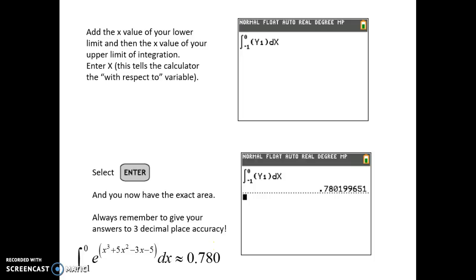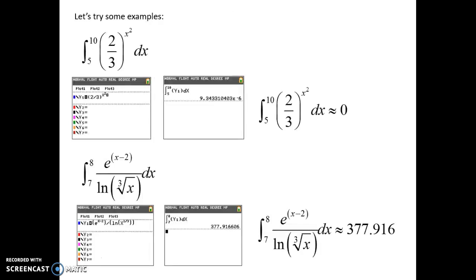Of the four things the College Board allows us to do with our calculator: one is to graph a function, one is to find the zeros of the function, the third is to evaluate a derivative at a point, and the fourth is to evaluate a definite integral. We need to know how to do all of those things.